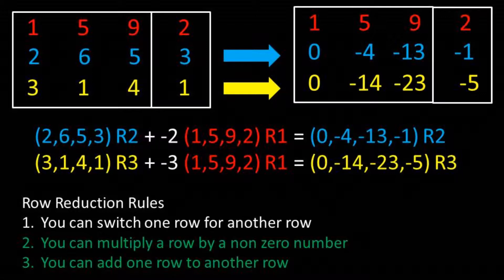For the third entry, we take 5 plus negative 2 times 9 and we get negative 13. And finally, for the fourth entry, we take 3 plus negative 2 times 2 and we get negative 1. These new values for row 2 now replace the old values in the matrix.